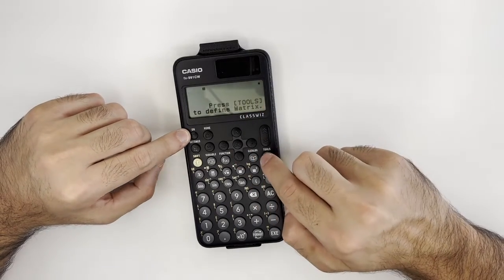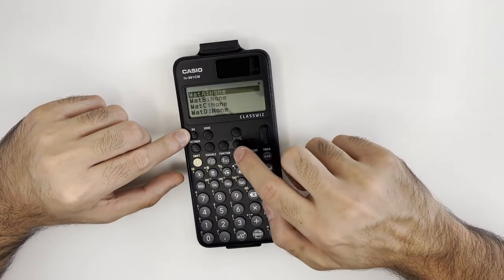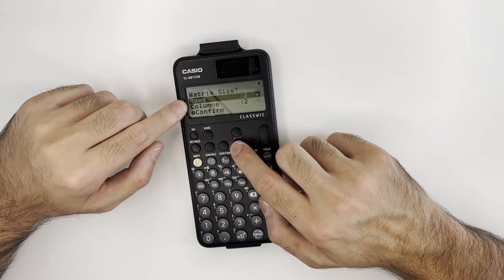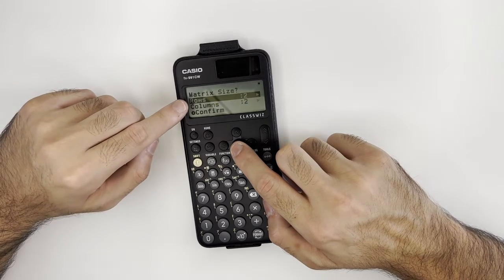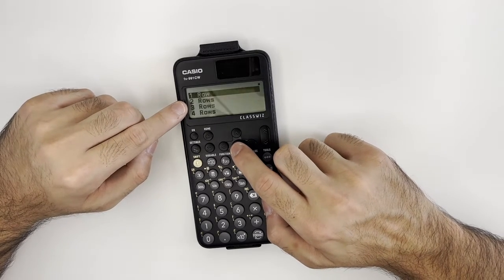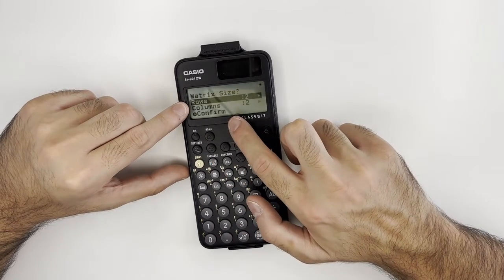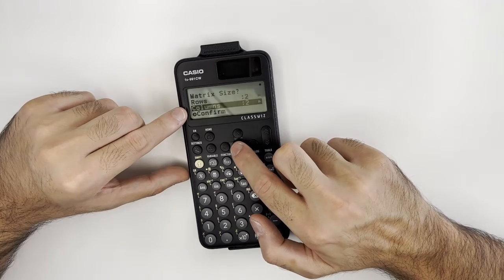Let's define matrix A to be of size 2 by 2. You can simply press OK on Rows to define the number of rows and OK or Execute on the Column to define the number of columns.